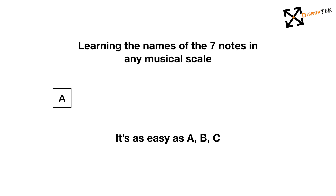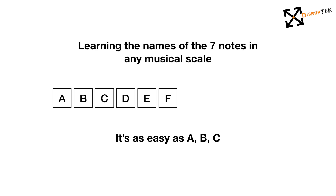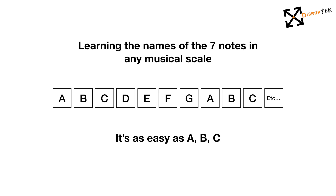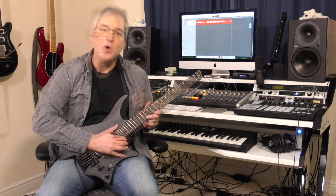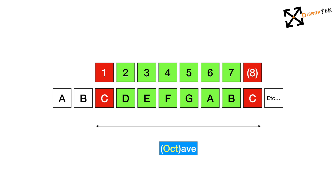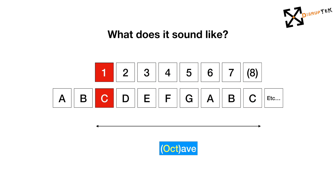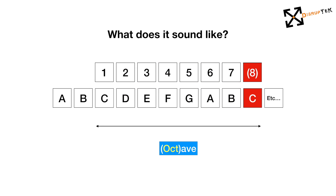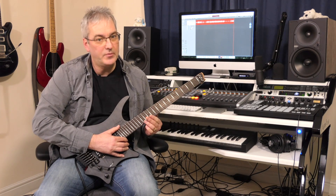We start at A and then move progressively through to G. After that, we move on to another A and continue up the next sequence, which is exactly the same sequence of notes, just an octave higher. We call it an octave because the sequence of notes in a scale needs eight notes — to move from the starting note through the seven notes of the scale before we hit the note that we originally started on, but an octave, that is eight notes, higher up.